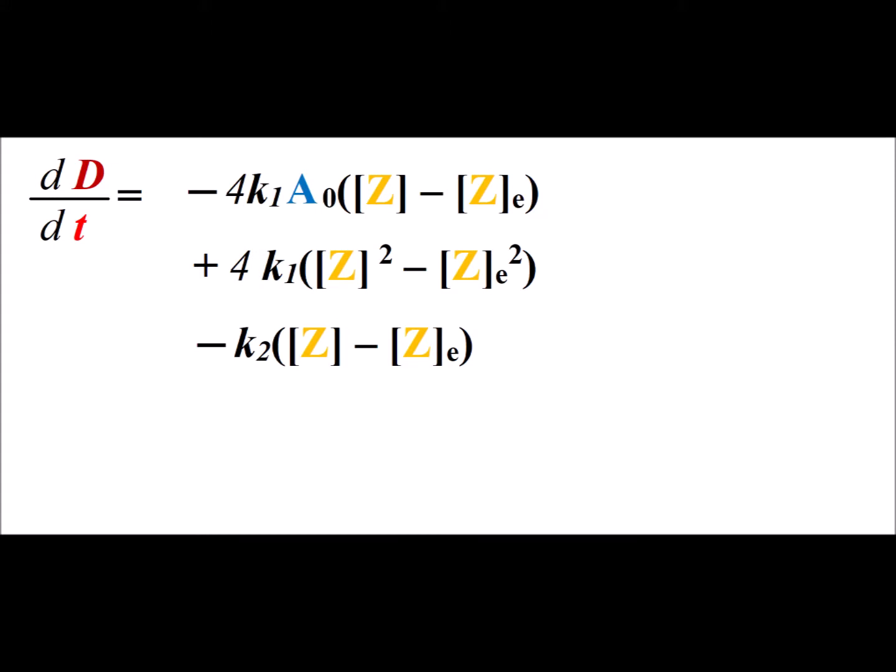Simplifying, we get the expression for dD dt as shown. Importantly, writing it in terms of this expression, Z minus the equilibrium concentration of Z, where possible.